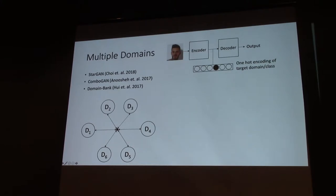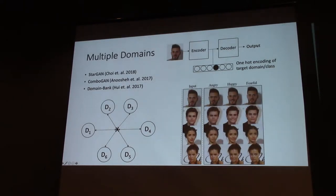The way it was implemented: you have an encoder that takes the input image, plus a one-hot vector that determines what the output domain will be, and then a decoder to generate the outputs. For example, with input faces, StarGAN results on human faces show that by setting the vector correctly, you can output an angry face, a happy face, or a fearful face.